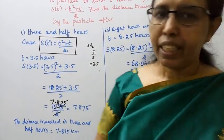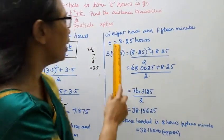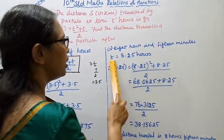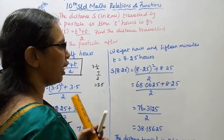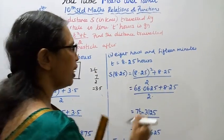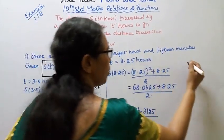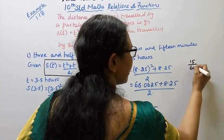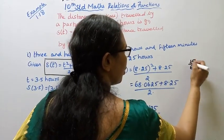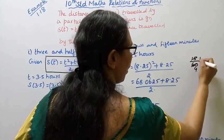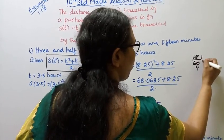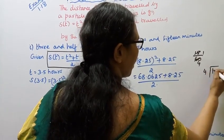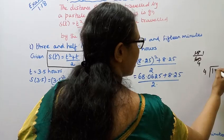Now for the second subdivision: 8 hours and 15 minutes. T equals 8.25 hours. For the 15 minutes part, 15 by 60, which is 1 by 4, so 0.25. Already 8 hours is there, so t equals 8.25.